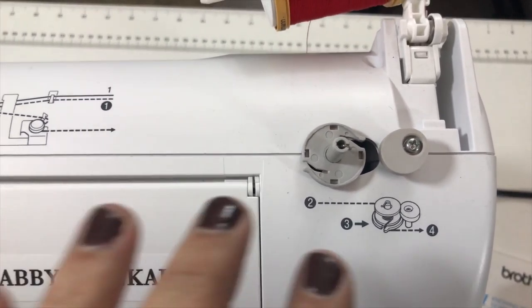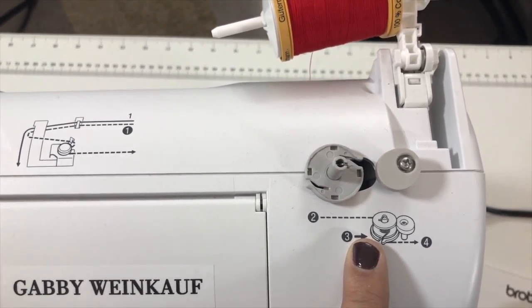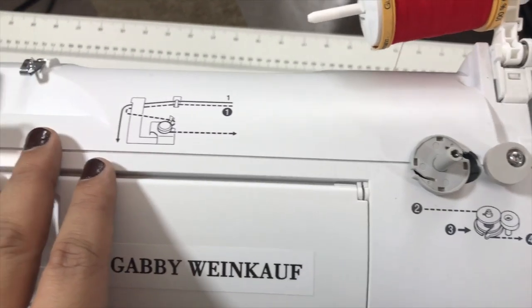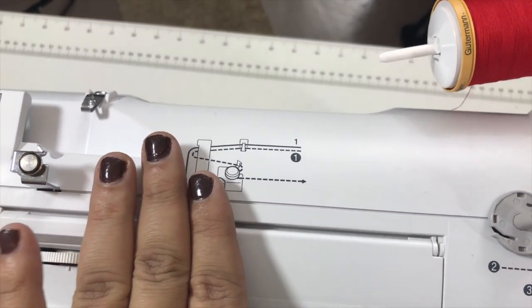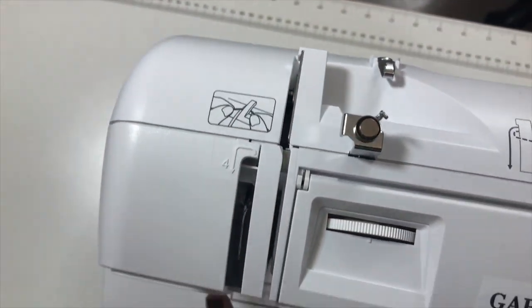Now, the machine has numbers. So normally this area here is directly for filling the bobbin, which we already did already. And this diagram here is for filling the bobbin. So you are not going to worry about this area. You're going to be worried about this area further.